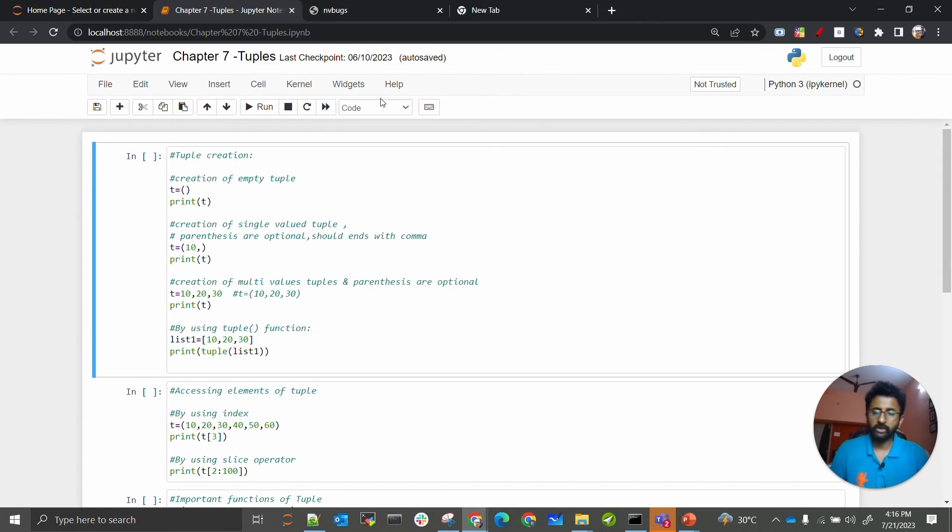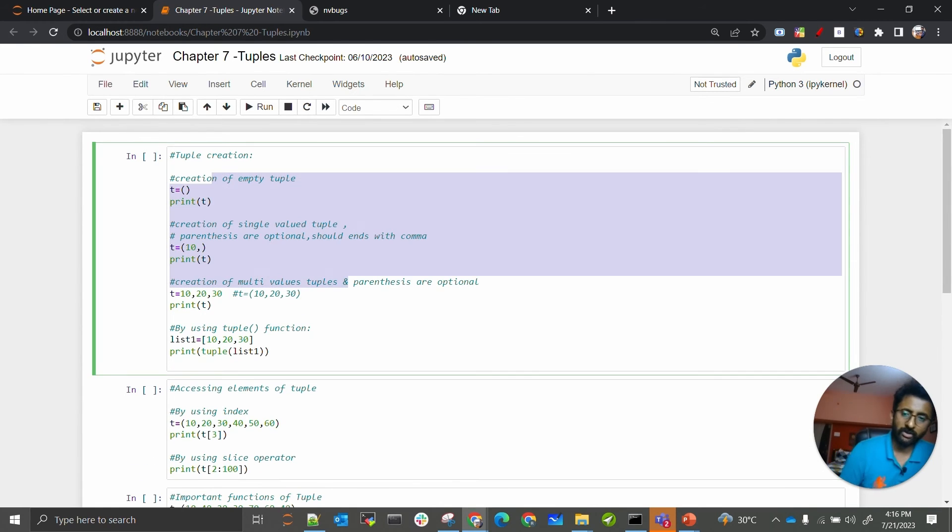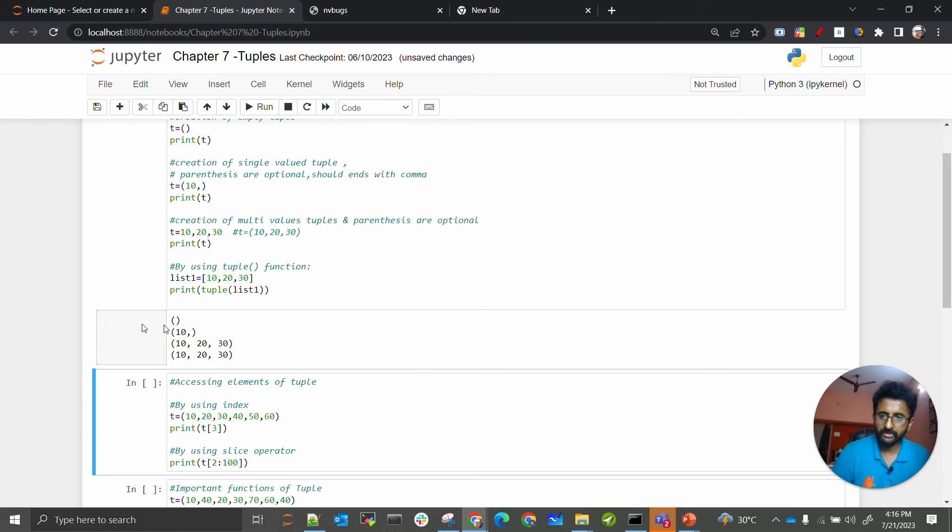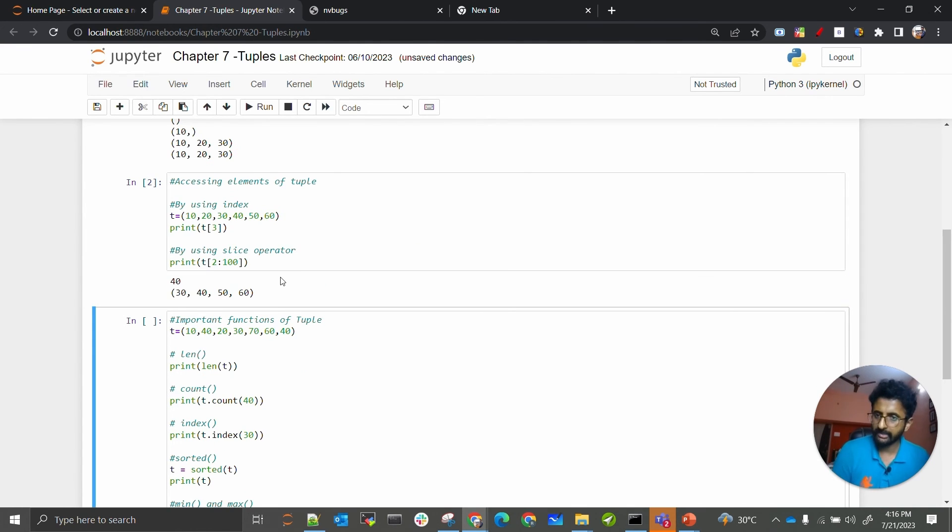We will see in a Jupyter Notebook. Here we are just creating different ways of tuple, and when I hit Shift-Enter, you can see these are the different ways of creating the tuple. To access the element, we can do indexing and slicing, similar to how we have seen in lists and strings.